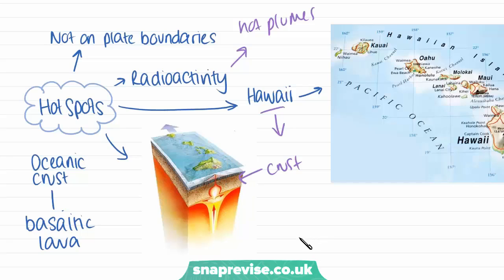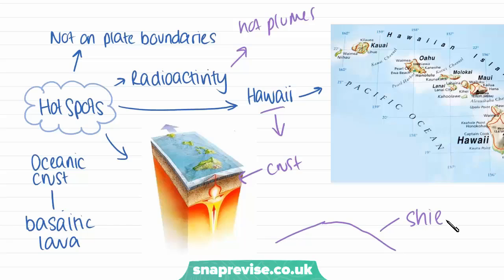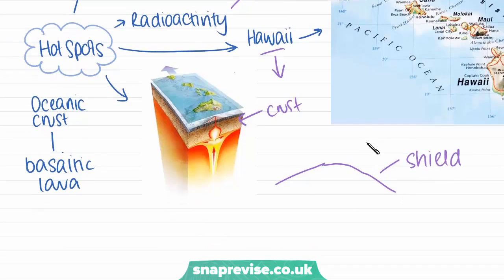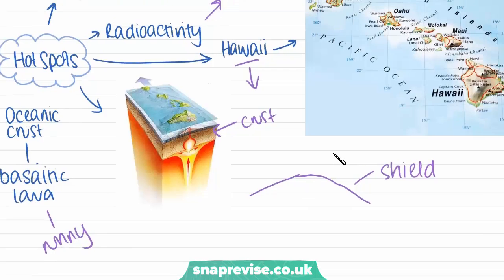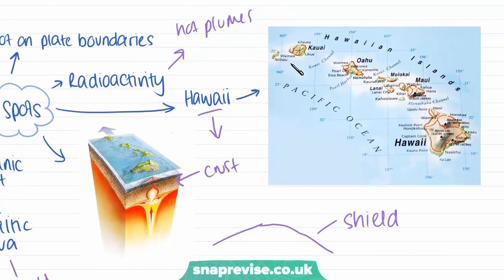The types of volcanoes we get at hotspots have very shallow sides, so they don't really look like the classic volcano — they're more of a round shape. These are called shield volcanoes. These eruptions are not explosive at all and the lava tends to be quite runny, so we don't really get many big explosions. These volcanoes can form chains of islands, because each volcano is essentially an island.